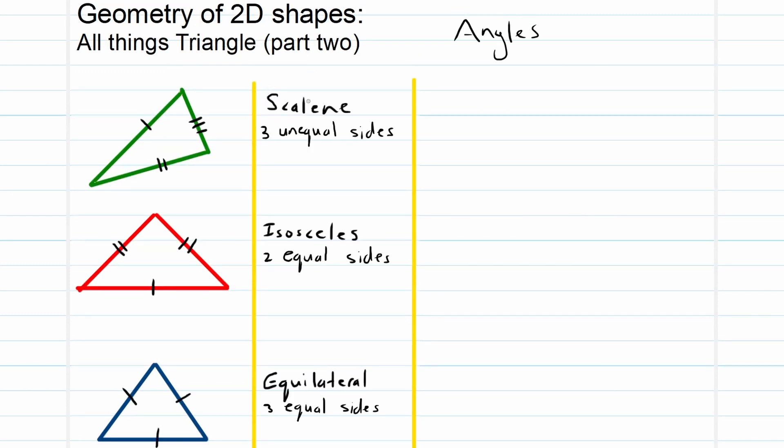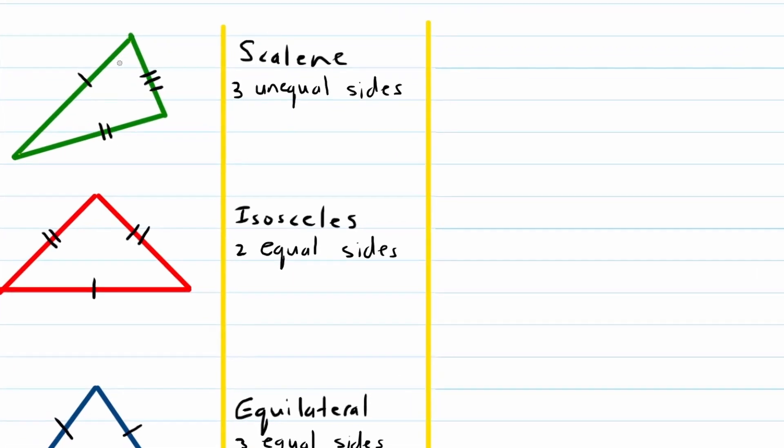So first up, scalene triangle. This is when the three different angles will also be unequal. Now important to note, opposite the longest side will be the biggest angle, and opposite the shortest side will be the smallest angle. So important to remember that one.